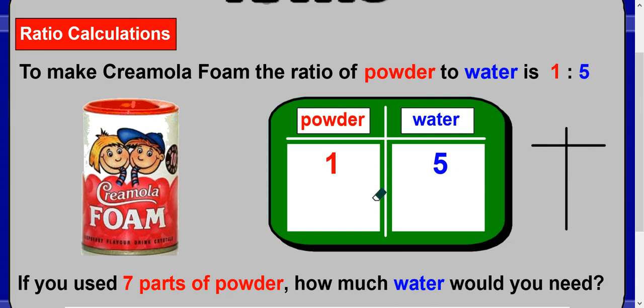So we know our ratio 1:5. We've got powder and water at the top of our table. In the simplified version, we've got 1 part powder to 5 parts water. What we're asked to do is work out how much water for 7 parts powder. So if you put a 7 at the bottom here, we need to work out what this number is going to be.